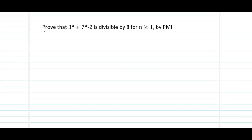The problem here is: prove that 3 power n plus 7 power n minus 2 is divisible by 8 for n greater than or equal to 1, by the principle of mathematical induction. We begin with the basic step, which is proving that p of 1 is going to be true.